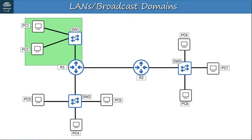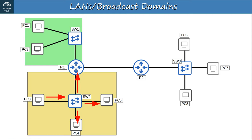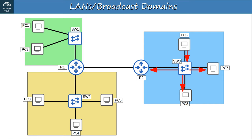That's one broadcast domain. What if PC3 sends a broadcast frame? SW2 will receive the frame and flood it out of all interfaces to R1, PC4, and PC5. R1, however, will not forward the broadcast frame. So that's the second broadcast domain: PC3, PC4, PC5, SW2, and one of R1's interfaces. What if PC6 sends a broadcast frame? SW3 will flood the frame to PC7, PC8, and R2, and R2 will not forward the frame. So this is the third broadcast domain: PC6, PC7, PC8, SW3, and one of R2's interfaces.